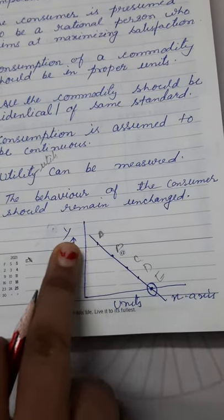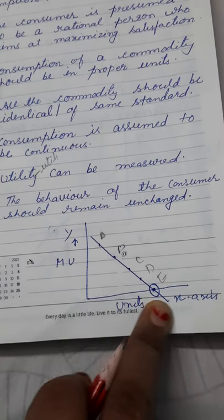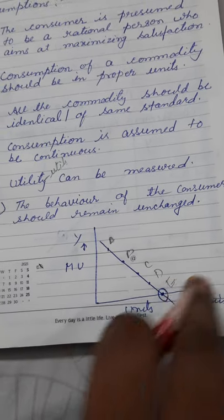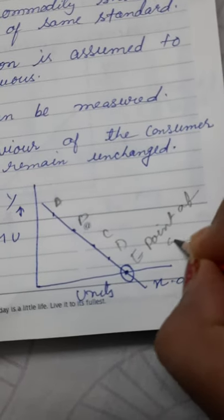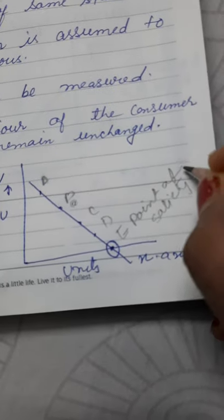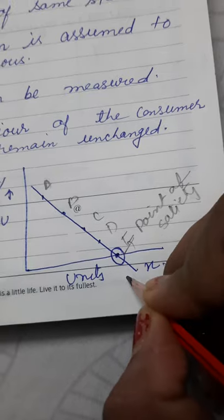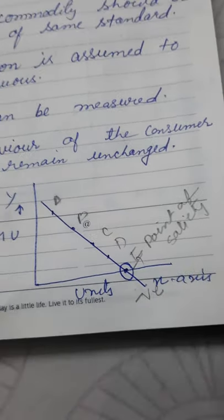And I have explained this graph that this is MU, it diminishes. A, B, C, D, E. E is a point where MU is zero and it is called point of satiety. Satiety means satisfaction. After this you don't want more. Or you may say saturation. This is the point of satiety. And after that MU goes negative.